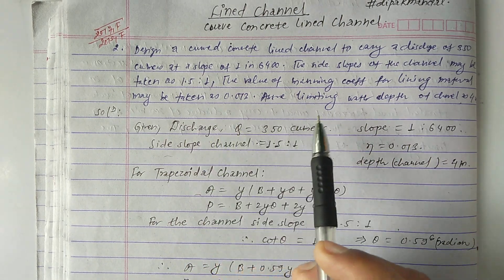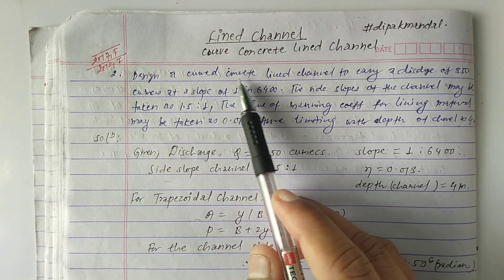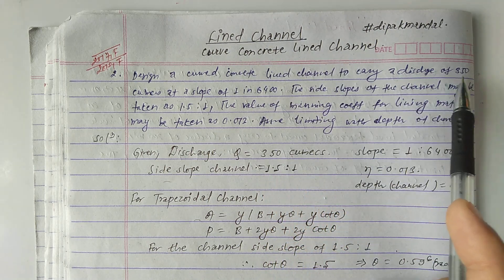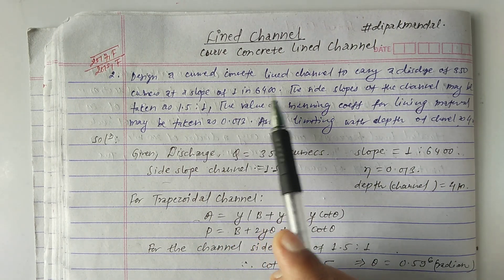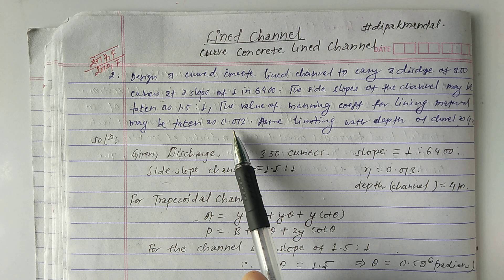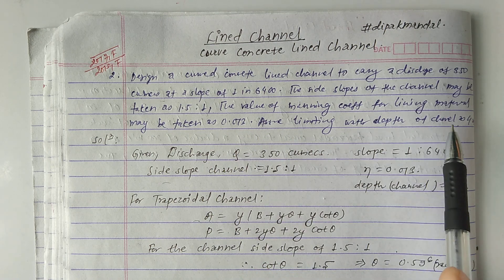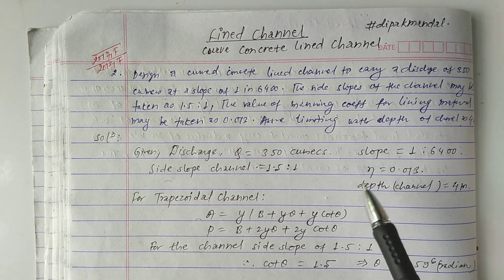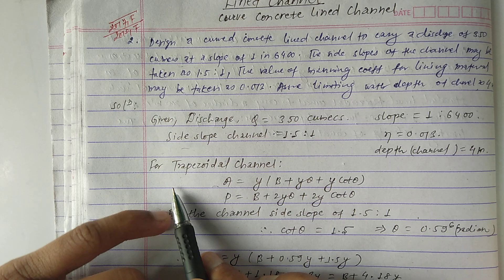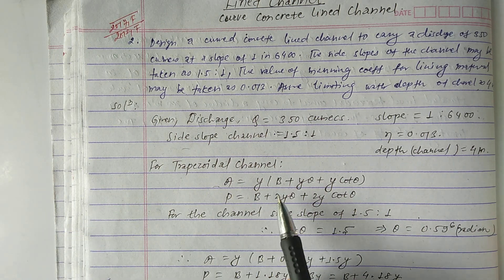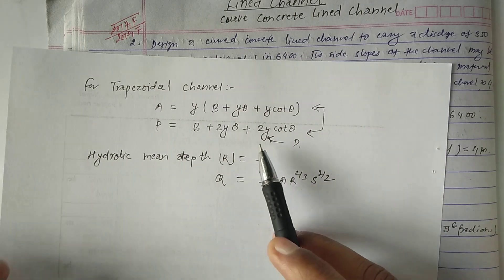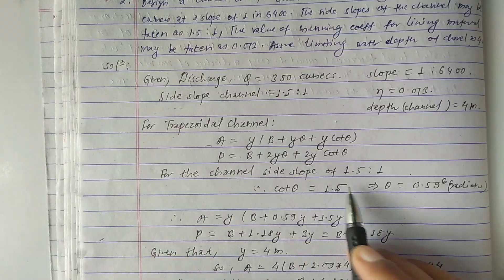Let's see the solution. We have to design a curved concrete or lined channel to carry a discharge of 350 cubic meters per second at the given slope. The side slope is 1.5 to 1, Manning's coefficient n = 0.013, and the limiting water depth is 4 meters. For the trapezoidal channel, we use: A = y(b + y·tanθ + y·cotθ) and P = b + 2y·tanθ + 2y·cotθ.